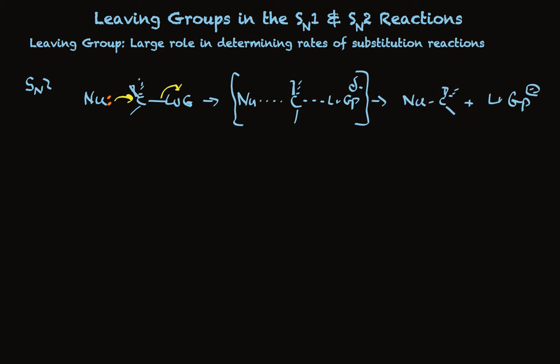And for the SN1 reaction, the leaving group simply departs through a transition state where the leaving group bond is, again, partially broken. Partial negative charge on the leaving group on its way to the carbocation plus leaving group.